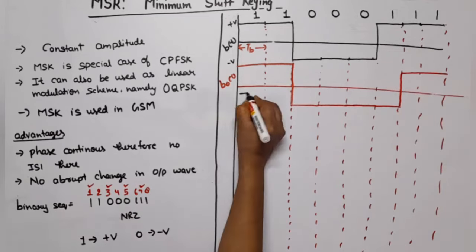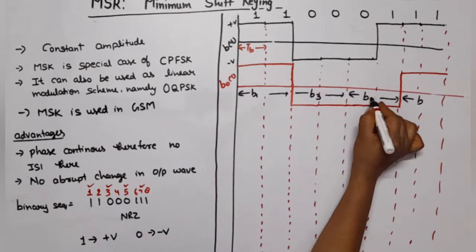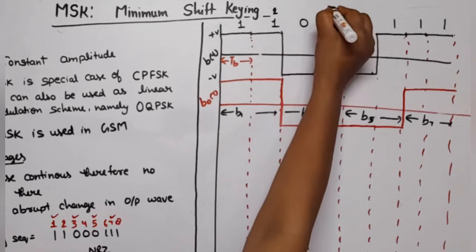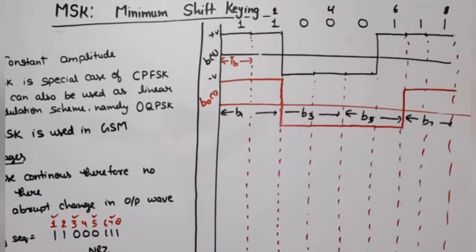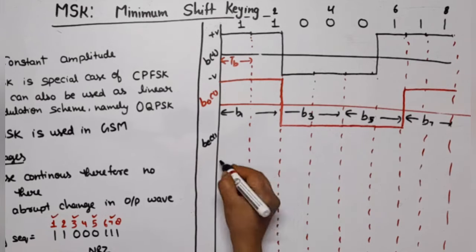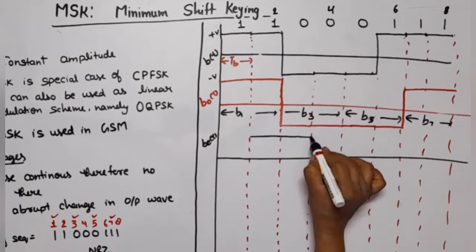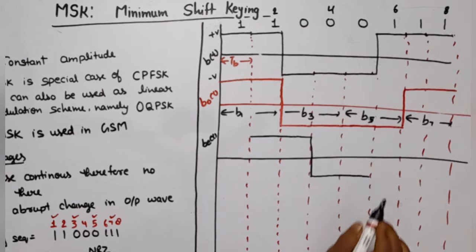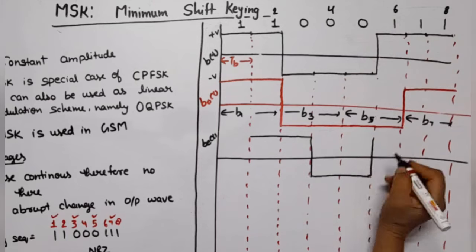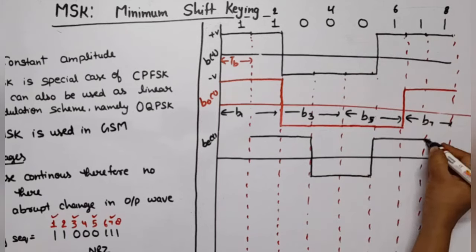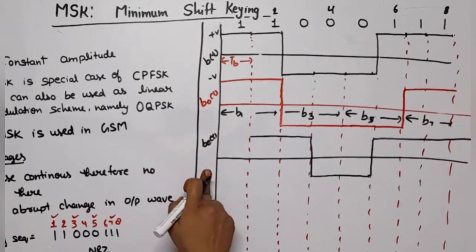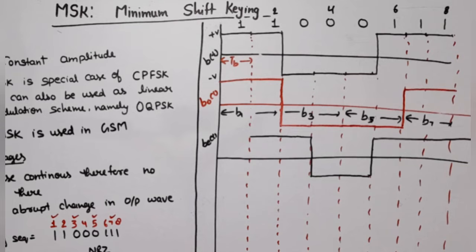For the even bit stream B_even(t): position 2 is 1 for two bit durations, position 4 is 0 for two bit durations, position 6 is 1 for two bit durations, and position 8 is 1 for two bit durations. So we have separated the binary bits: first represented as pulses, then separated into odd and even streams. We then multiply odd bits with cosine and even bits with sine.